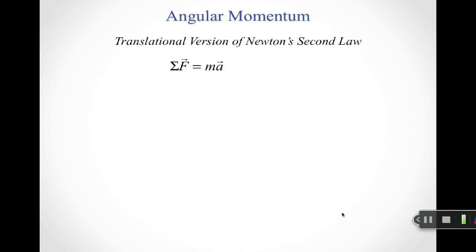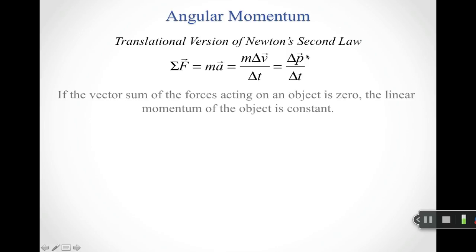Newton's second law in translational form can be rewritten in terms of how velocity changes with time. Tucking mass inside gives m times v, which is momentum, so the translational version of Newton's second law tells us how momentum changes with respect to time — forces act to change momentum. If the vector sum of forces acting on an object is zero, then the linear momentum is constant because it doesn't change.